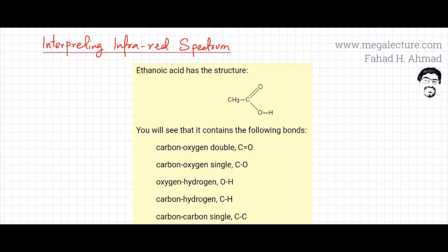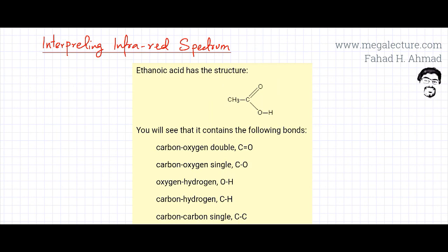Now we're going to jump straight to interpreting infrared spectra. If you're given a molecule like ethanoic acid, you would notice it has many different bonds — all these bonds would be vibrating, contracting, stretching, bending, and absorbing energies from the infrared spectrum. The first thing you need to analyze is how many different types of bonds you have. There's a C=O bond, a C–O single bond, O–H bonds, CH bonds, and a C–C single bond.